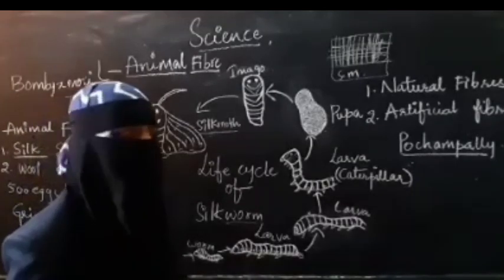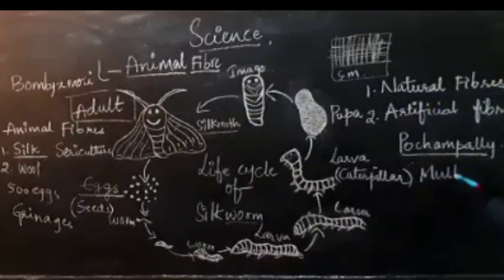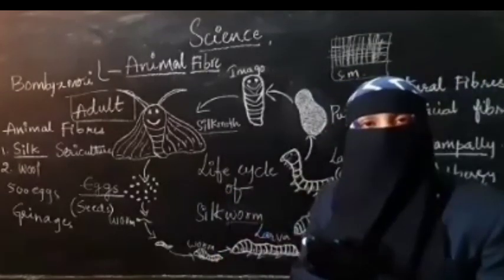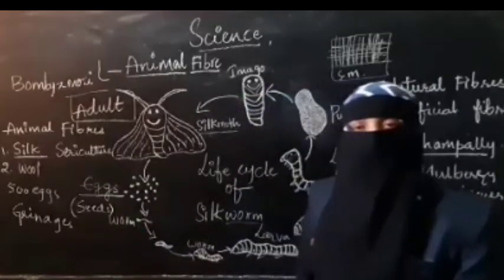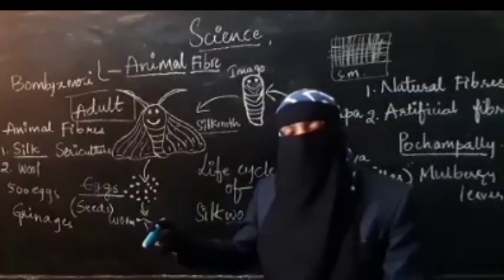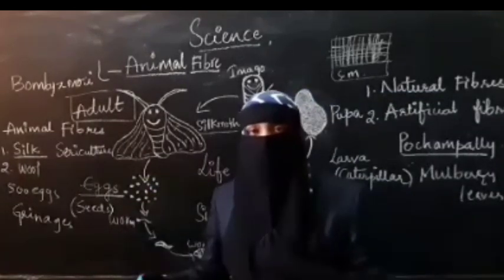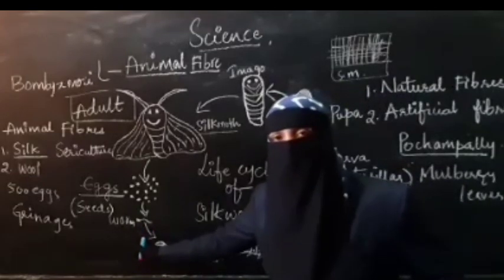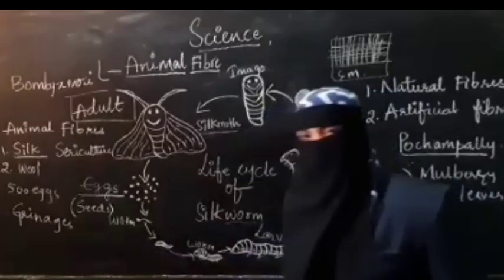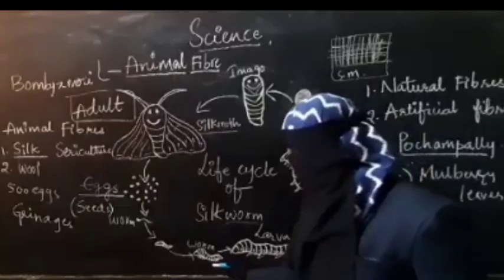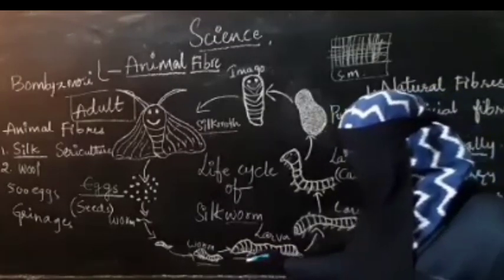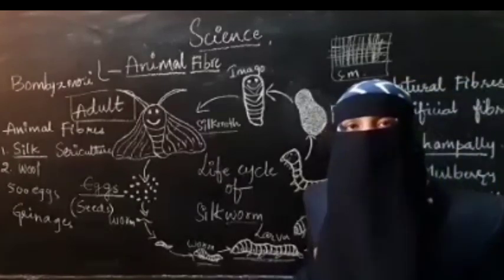The eggs are kept on mulberry leaves and allowed to hatch there. As soon as an egg hatches, a small worm comes out. The worm is present on a bed of chopped mulberry leaves. As soon as it comes out of the egg, it will start eating. The food of the silkworm is mulberry leaves — Bombyx mori eats mulberry leaves.